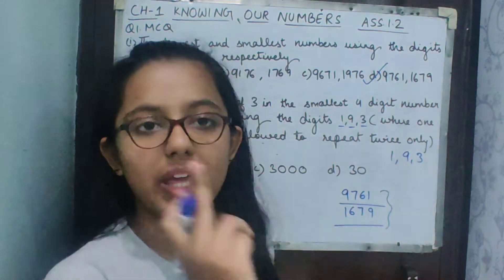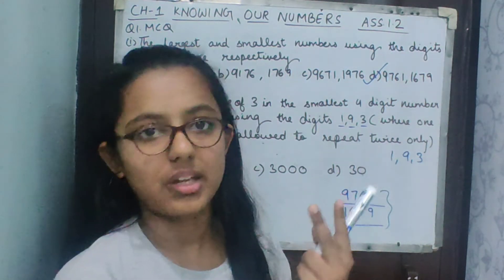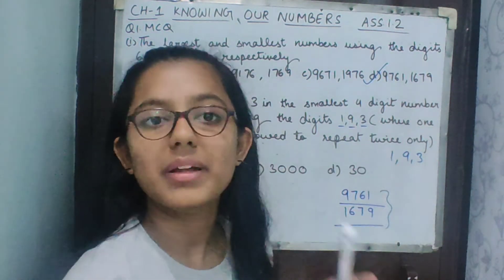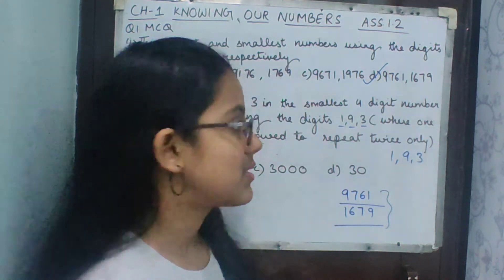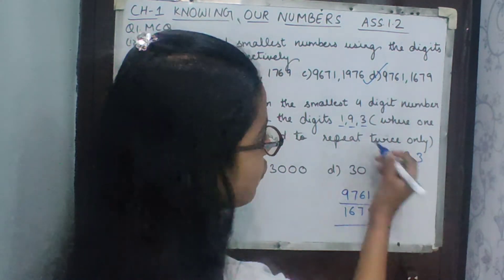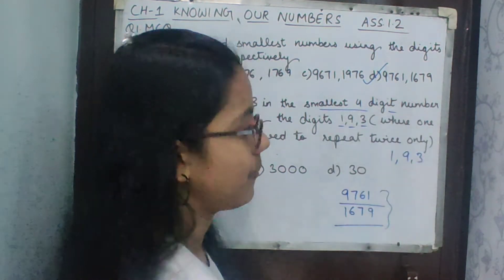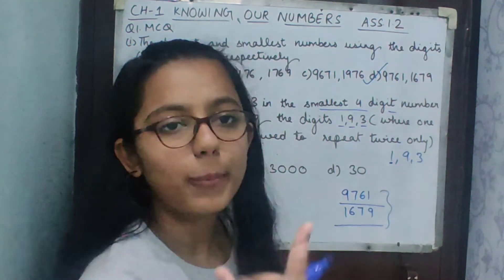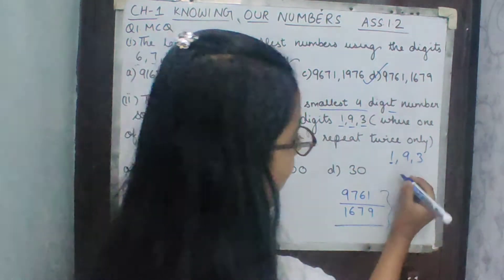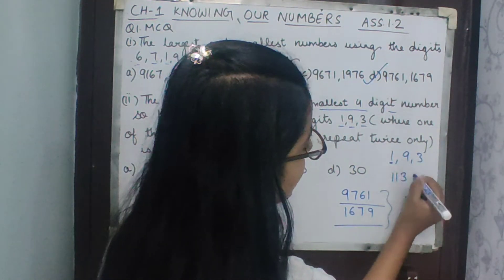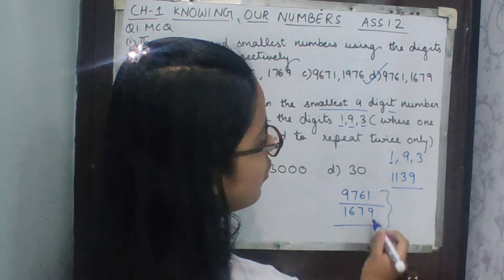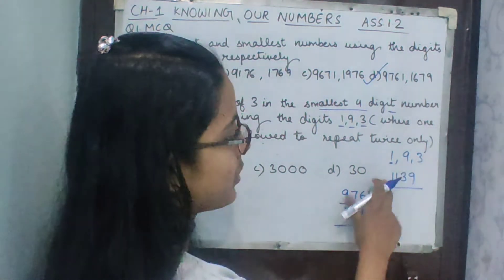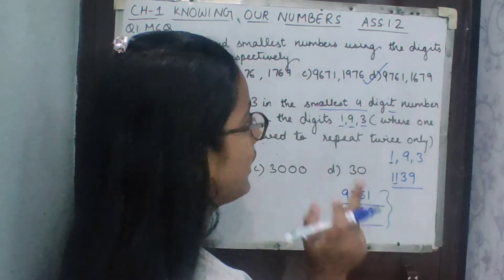The digits are 1, 9, and 3. We are allowed to write any one digit two times. Since we need the smallest number, we repeat the smallest digit — which is 1 — twice. So our number becomes 1, 1, 3, 9. This is the smallest four-digit number and we have also used one digit two times.